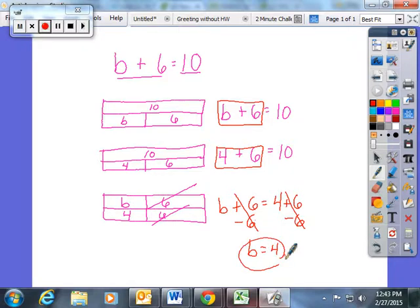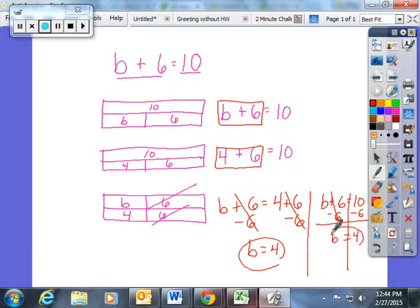And if you look about it, this is very simple, very similar to the easy way that most of people my age grew up doing. You're trying to get B by itself, so you undo addition with subtraction, and whatever you do to one side, you must do to the other. And the answer is B equals 4. And I will get the students here, I promise. But it's really nice for them to see why this works.